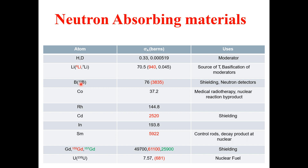Boron and its isotope boron-10: natural boron has a cross-section of 76 barn, while boron-10 has a cross-section of 3835 barn. The main roles of boron in a nuclear reactor include shielding, neutron-based detectors such as boron trifluoride gas-filled detectors, and solid-state neutron detectors using boron nitride semiconductor.